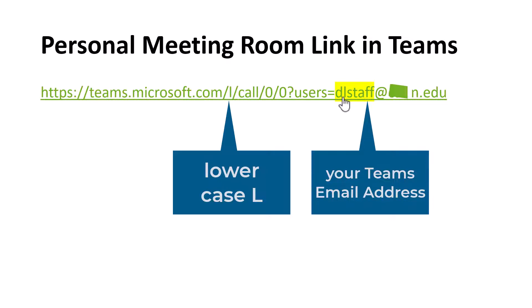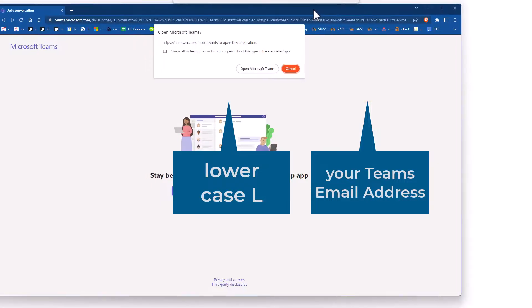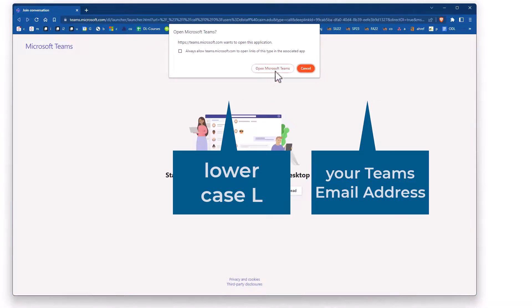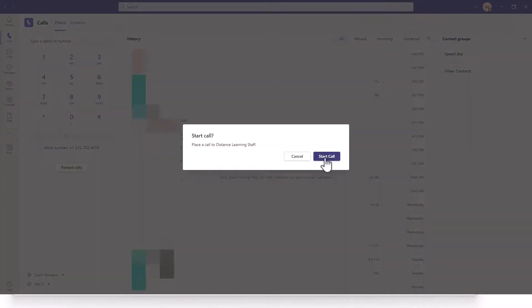In this case, if I wanted to join this personal meeting room for the distance learning staff, I simply click on the link and then it says 'Open this in Microsoft Teams.' Obviously you have to have the Teams application installed, and then you simply click on 'Start Call.'